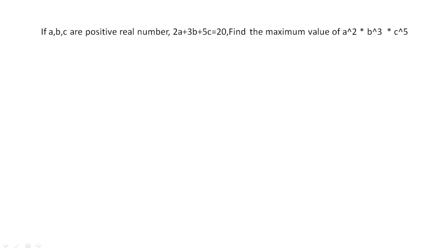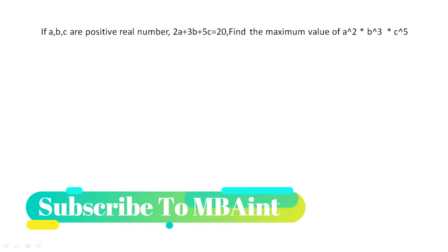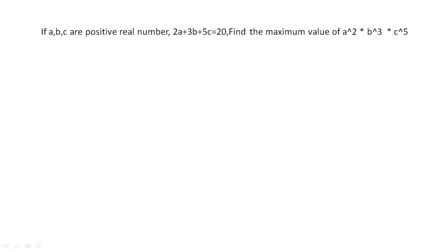Hello everyone, welcome to Ambient. Today we are going to discuss a concept on maxima and minima, which is a part of algebra. So let's get started. You can see a question here which says: a, b, and c are positive real numbers where 2a + 3b + 5c = 20, and they are asking you to find the maximum value of a² × b³ × c⁵.